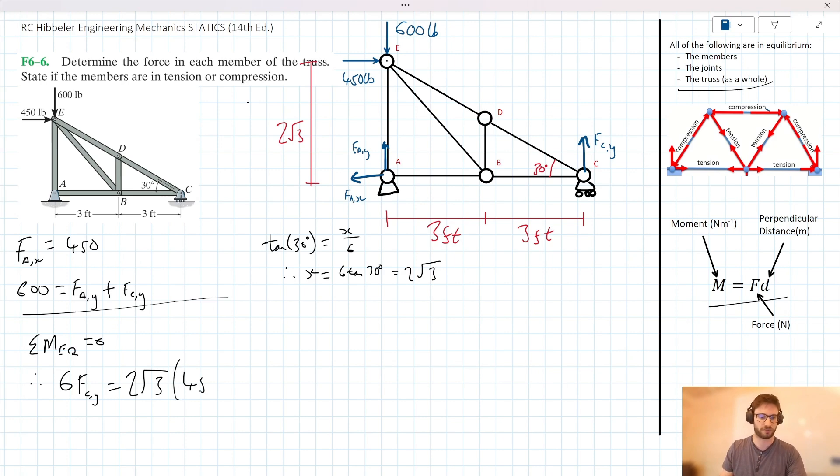So we could just plug that in, right? 450. We can rearrange for F_CY here. And we can simplify this down to 150 root 3, which when we put it into our calculator, gives us a value of roughly 259.8. So roughly 259.8. What are we working in here? Pounds. Okay. Cool.